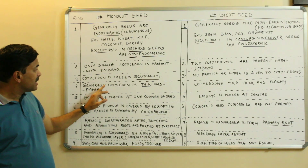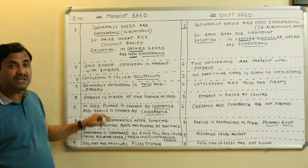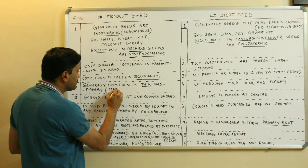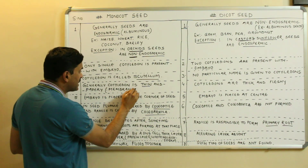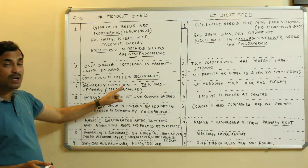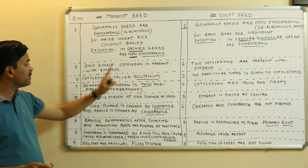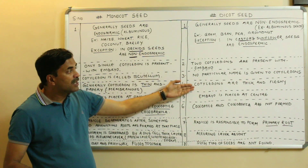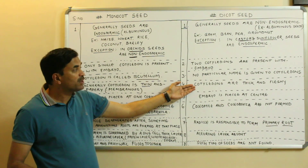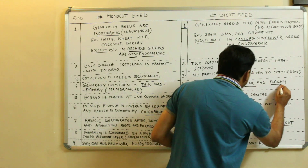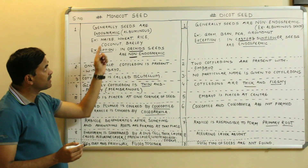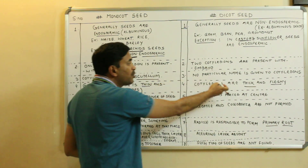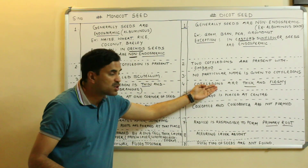Fourth point: in monocot seeds the single cotyledon is thin and membranous — it is papery. In dicot seeds, however, the cotyledons store food and hence are thick and fleshy. So a key difference is that monocot cotyledons are thin and papery while dicot cotyledons are thick and fleshy because they store food.